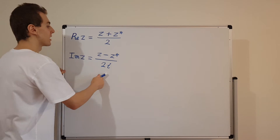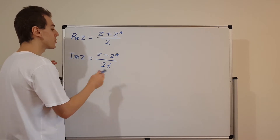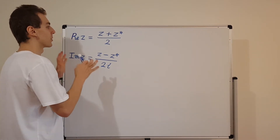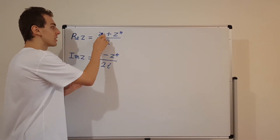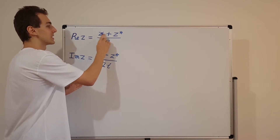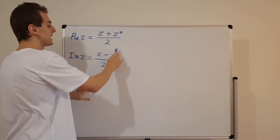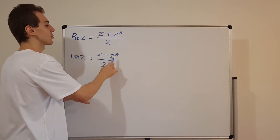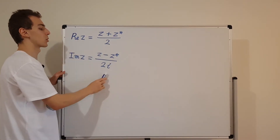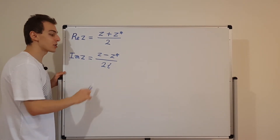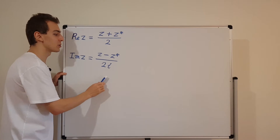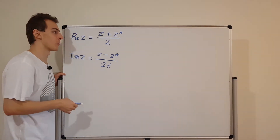This might look arbitrary — where does it come from? We're going to substitute the Cartesian form of z and z* to verify that these expressions are actually correct. And then I'll show you a visual intuition as to why they work.